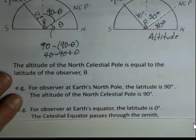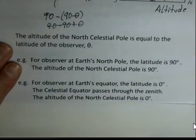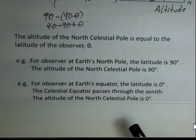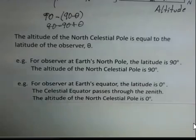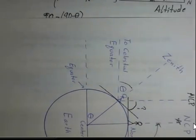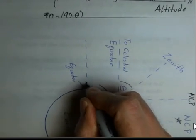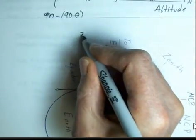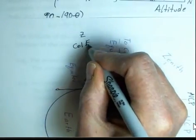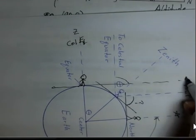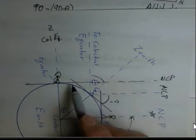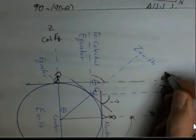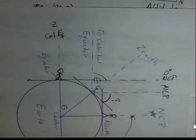What about for an observer at the Earth's equator? When we're at the Earth's equator, the celestial equator is at the zenith, and the altitude of the North Celestial Pole is going to be zero degrees. Our observer is at the equator, and looking at this diagram, the zenith here is the celestial equator. The North Celestial Pole is right on the horizon — zero degree altitude for the North Celestial Pole for the observer at the equator.